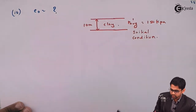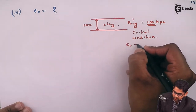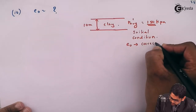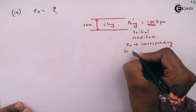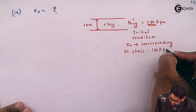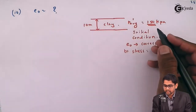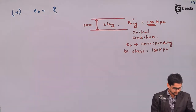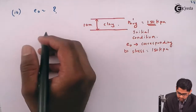The void ratio corresponding to 150 kPa becomes e₀. So e₀ will correspond to a stress equal to 150 kilo Pascals, because initially the clay base is acting under 150 kilo Newtons per meter square of overburden pressure.